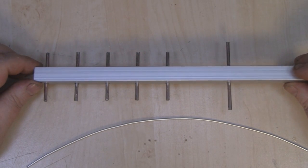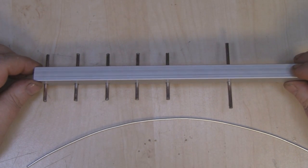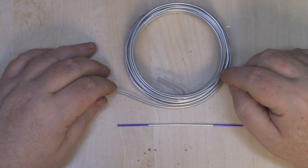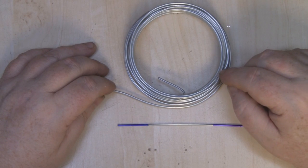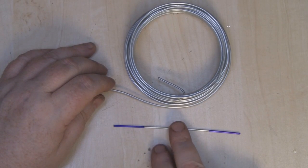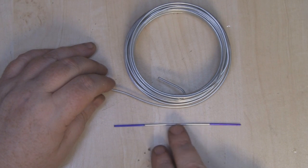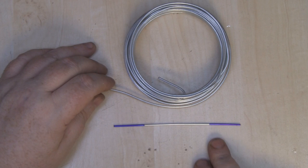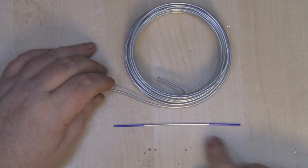To make the driven element for this Yagi, I've got some 2 millimeter thick galvanized fencing wire. I've cut off a length at 126 millimeters, which is one full wavelength at 2.4 gigahertz, and I've marked off two quarter wavelengths at either end of the length of wire.